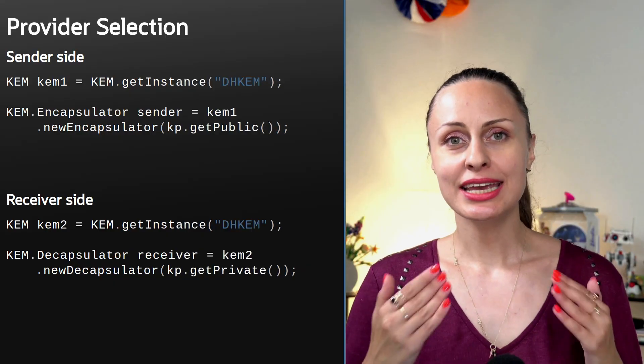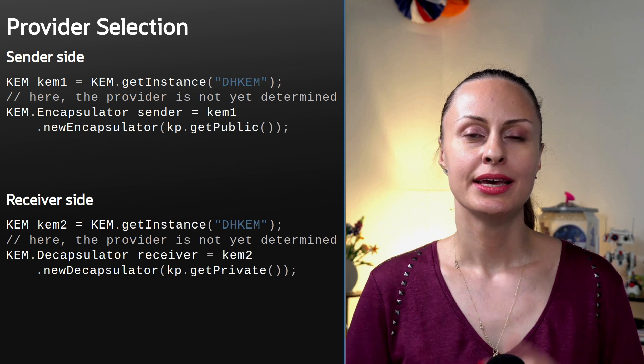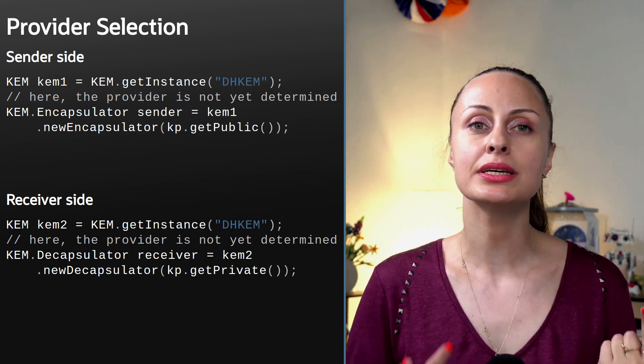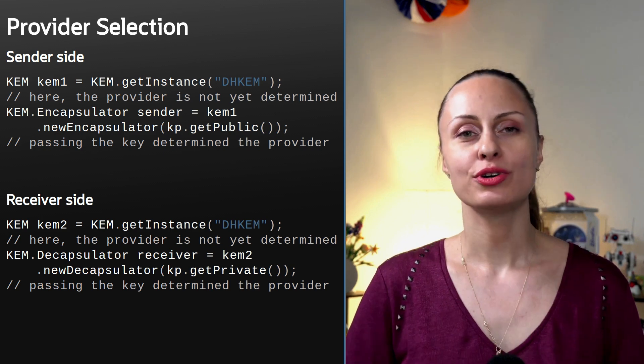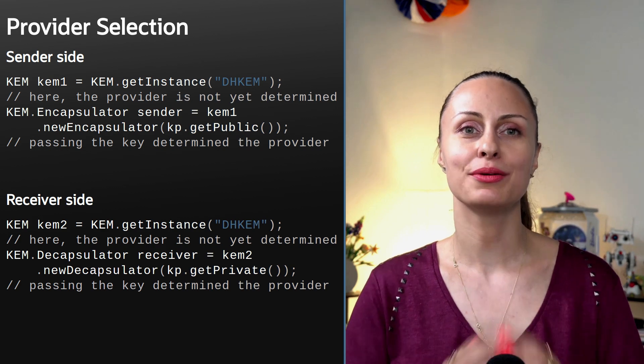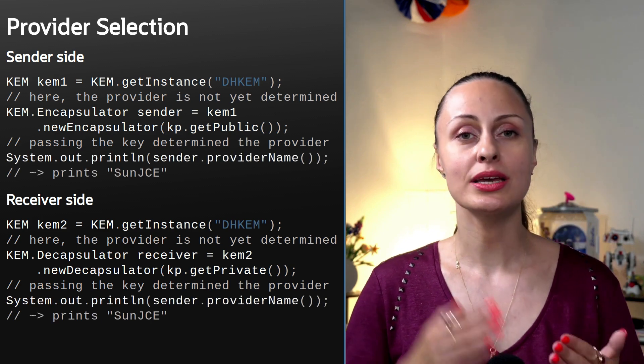When using a KEM algorithm, your choice depends not only on the name of the algorithm, but also on the available security providers. Java cryptography getInstance methods — such as KEM.getInstance("DHKEM") — return the implementation from the first provider that implemented the requested algorithm. However, the JDK delays the selection of the provider until the relevant newEncapsulator or newDecapsulator method is called. These methods accept the key object and can determine at that point which provider can accept the specified key object. If you would like to discover which provider is selected, use the provider name methods of the encapsulator and decapsulator instances.